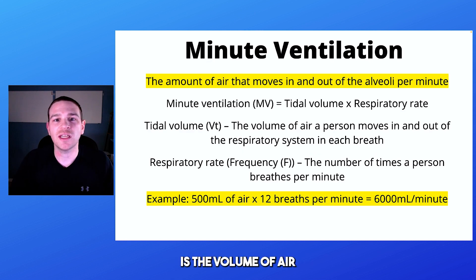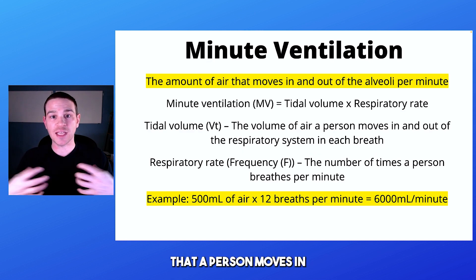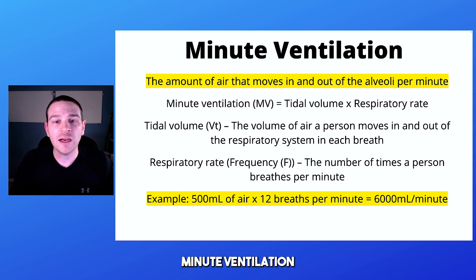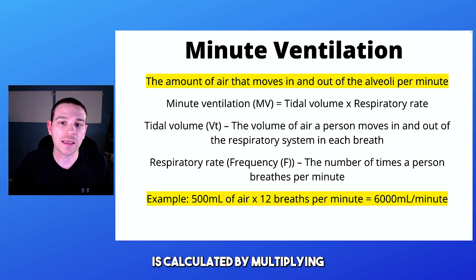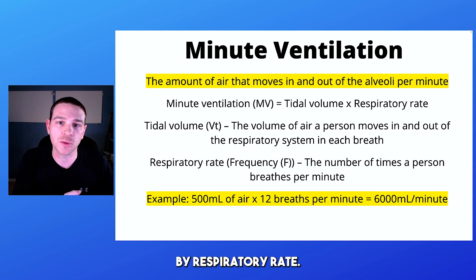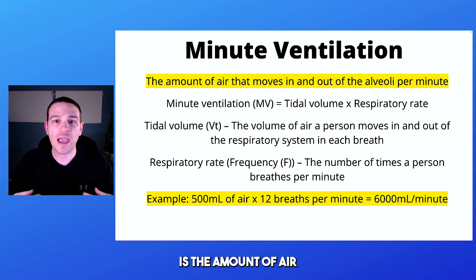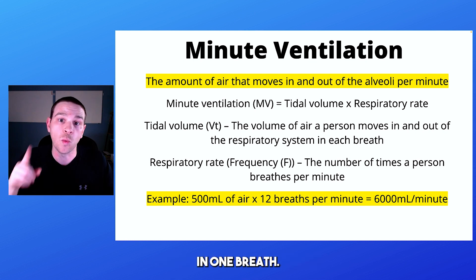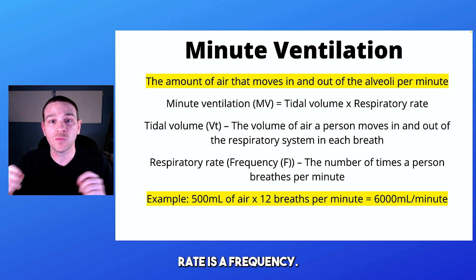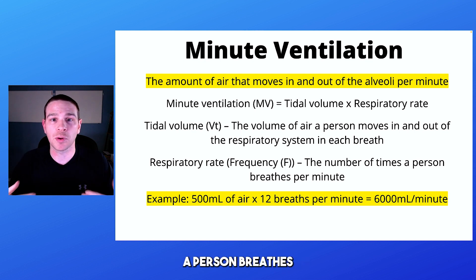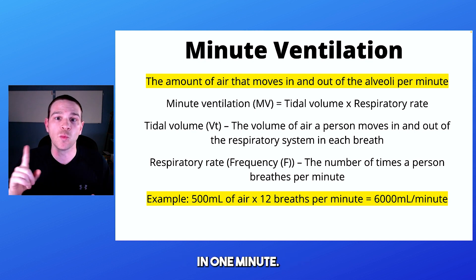Minute ventilation is the volume of air that a person moves in and out of their lungs in one minute. Minute ventilation is calculated by multiplying tidal volume by respiratory rate. Tidal volume is the amount of air a person moves in and out of the respiratory system in one breath. Respiratory rate is a frequency — the amount of times a person breathes in one minute.